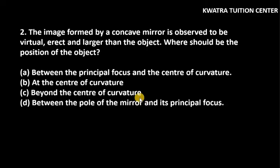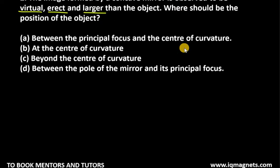Second question: The image formed by a concave mirror is observed to be virtual, erect, and larger than the object. There are three characteristics shown in the image. Where should be the position of the object? The position must be such that you get a virtual, erect, and larger than the object image.